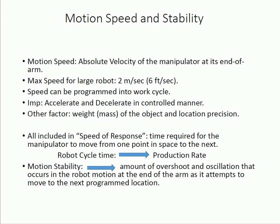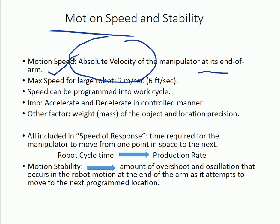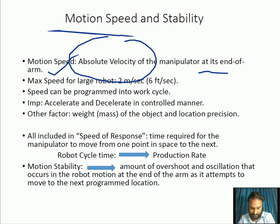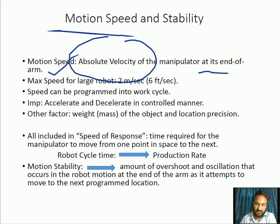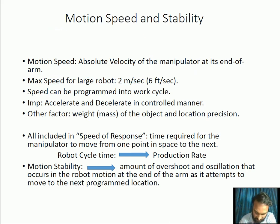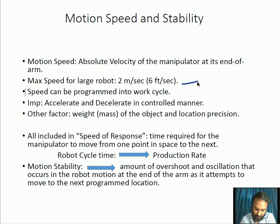Motion speed is defined by the absolute velocity of the manipulator at the end of the arm — where the end effector is attached. Based on that, we define the motion speed of the end effector. For large robots, the maximum speed is generally 2 meters per second.